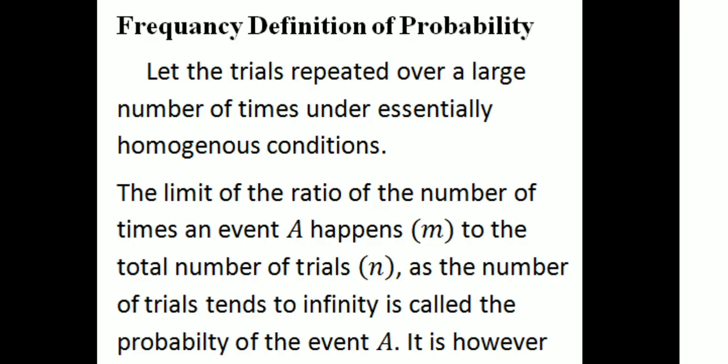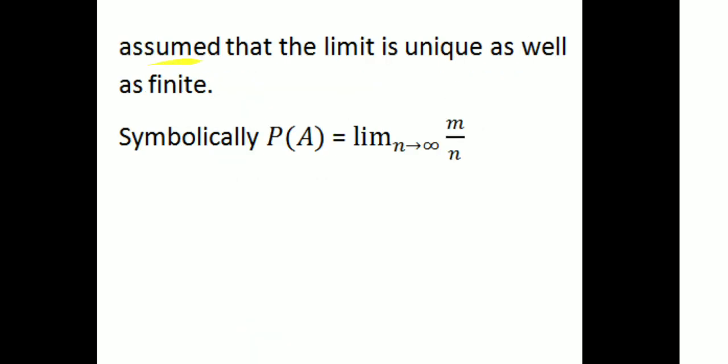Frequency definition of probability: let the trials be repeated a large number of times under essentially homogeneous conditions. The limit of the ratio of the number of times an event A happens (m) to the total number of trials (N), as N tends to infinity, is called the probability of the event A. That is, P(A) = limit as N tends to infinity of m/N.